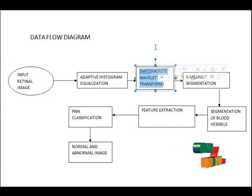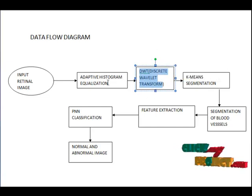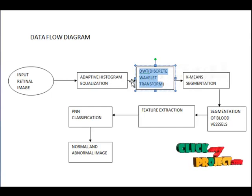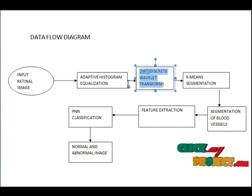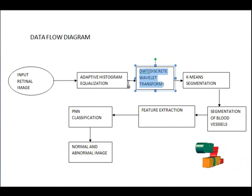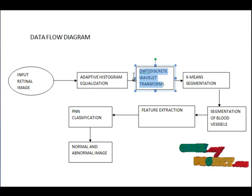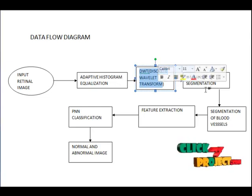The next step is DWT. The discrete wavelet transform will be applied after adaptive histogram equalization. A discrete wavelet transform is any wavelet transform for which the wavelets are sampled. A key advantage it has over Fourier transformation is temporal resolution — it captures both frequency and location information.